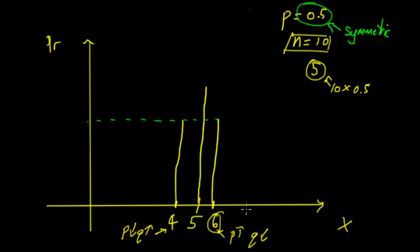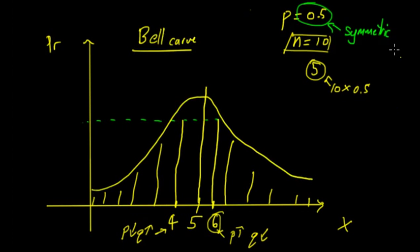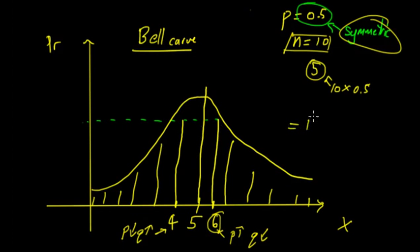The probability changes the further along you get, but on either side of the mean they're going to be the same. As you can see, it's symmetric, and a nice way to describe this one is that it has a bell curve type of shape. An important thing to note is that all these probabilities added together must always equal 1. So the most common value might only be about 0.3, others maybe 0.2, going down to 0.01, for example.